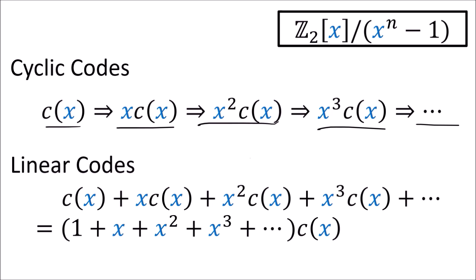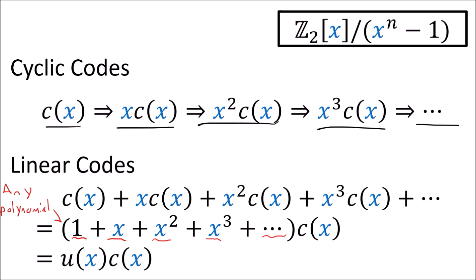We can factor out c(x), and since we have total control over which powers of x to include in the sum, this tells us that any polynomial multiplication of a valid codeword yields another valid codeword. So if c(x) is valid and the code is linear and cyclic, we can multiply c(x) by any polynomial u(x) and be guaranteed to get another valid codeword.